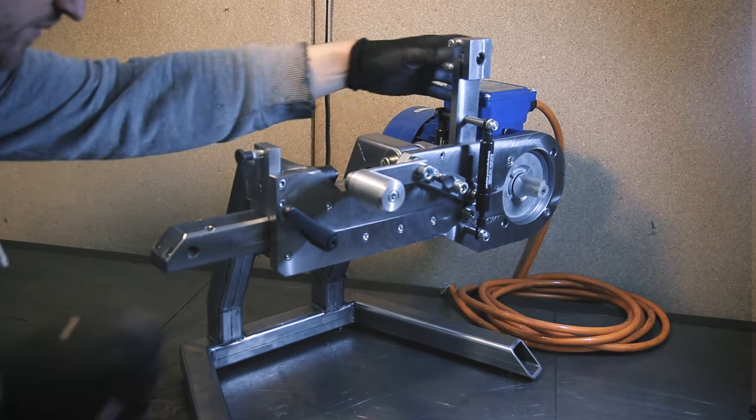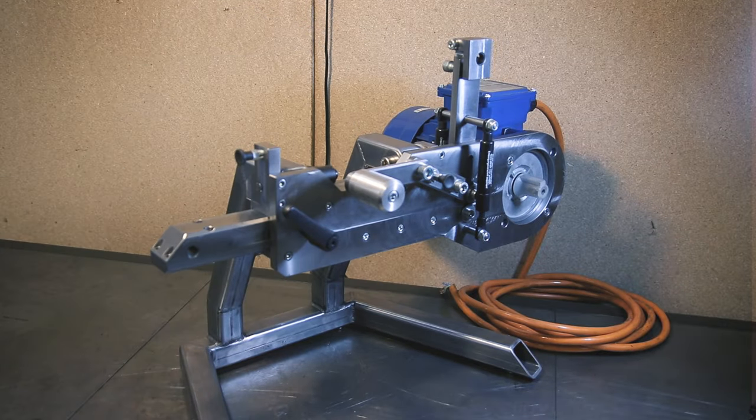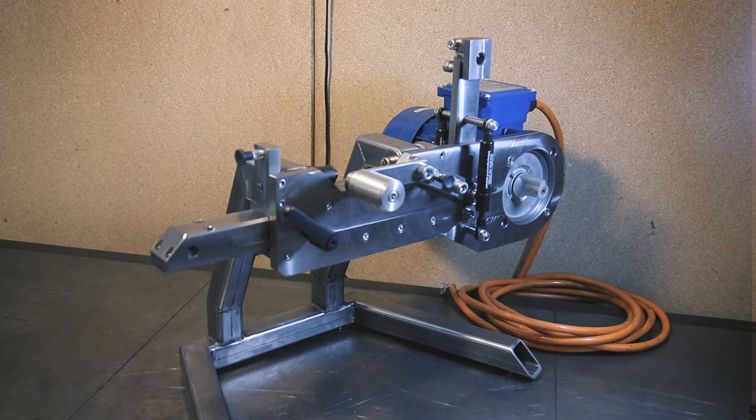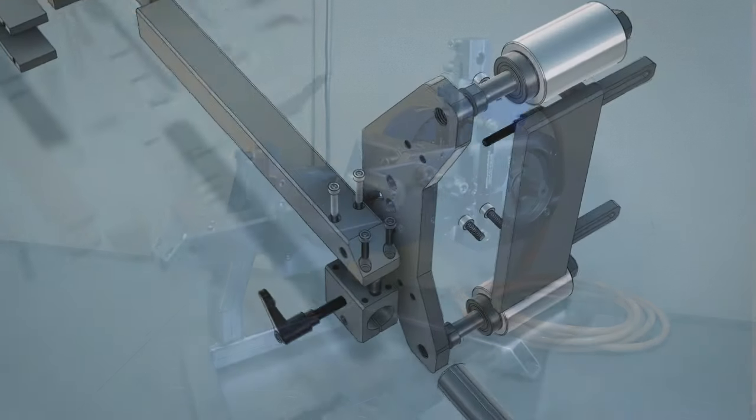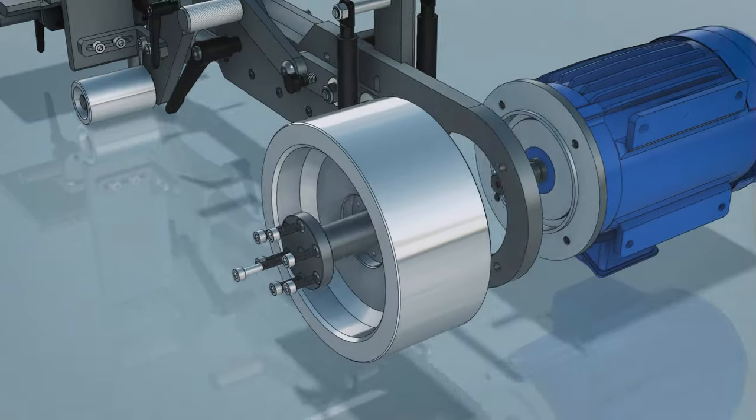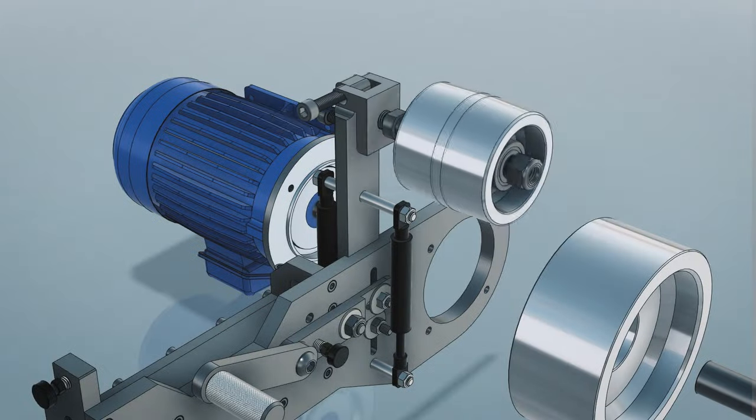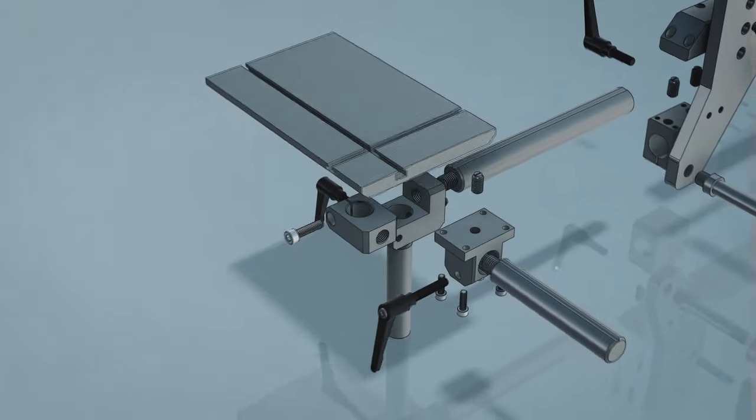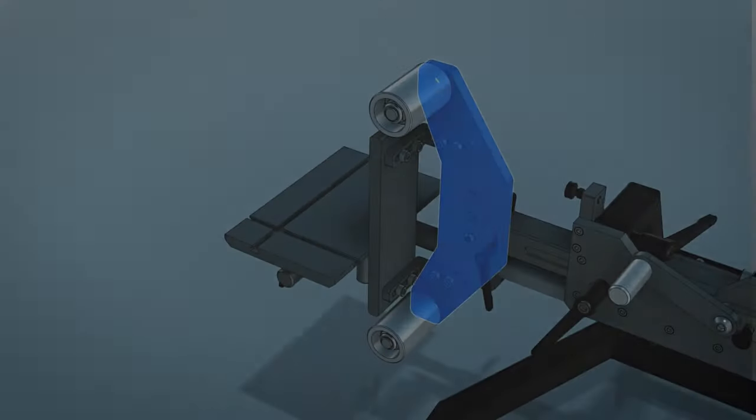For everybody else, this is where we left off last time. The mainframe of the grinder is finished, as well as the base, tool arm, and belt tension and tracking assembly. Today we're making parts for the flat platen, drive wheel, all the pulleys, and a few parts for the table system.